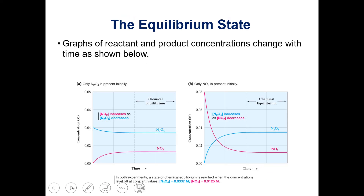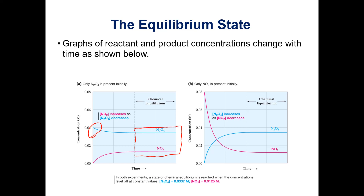To look at this visually, if we start with a certain concentration of N2O4 and at first we have no NO2, some of the N2O4 is going to break down into NO2. Eventually we reach a point where N2O4 is breaking down into NO2 and NO2 is reacting to form N2O4 at the same pace, so our concentrations are no longer changing.